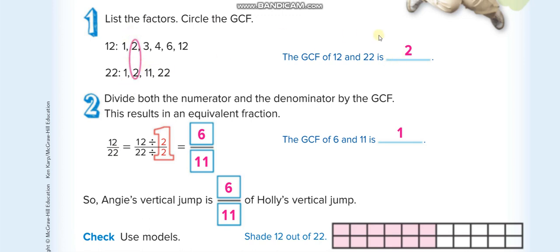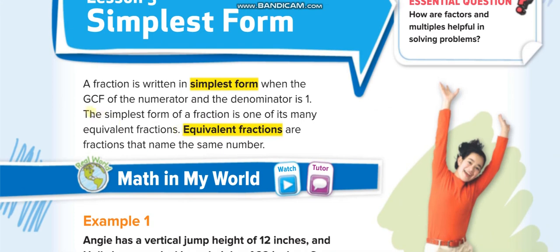But when you simplify it and find the GCF of 6 and 11, the factors for 6 are 1 times 6 and 2 times 3, so 1, 2, 3, and 6. For 11 only 1 and 11. So only 1 is the common one, so the greatest common factor of 6 and 11 is 1. So if a fraction is in its simplest form and you find its greatest common factor, you will always get 1.